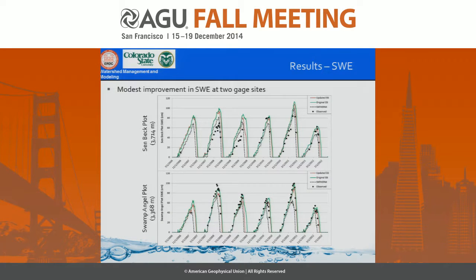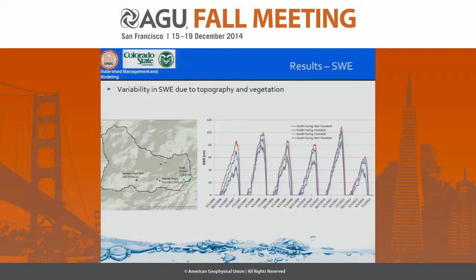Comparing the updated model at the two point sites, there's only modest improvement at the point scale. We also have the Snowther model from Landry et al., which is one of the more physically based energy balance models, though it was run with standard values and not calibrated — we're matching about the same. The updated version melts a little bit sooner than the original. But when we look at spatial variability across four locations within the basin — north-facing and south-facing, forested and non-forested — we're seeing a lot of difference in snow water equivalent that we didn't see in the original model.